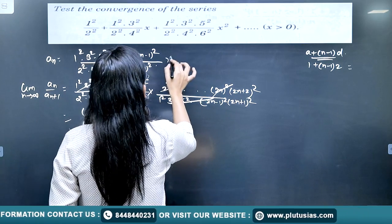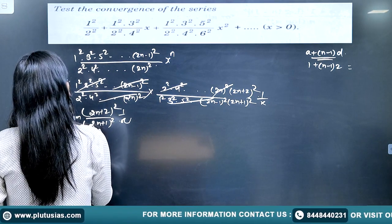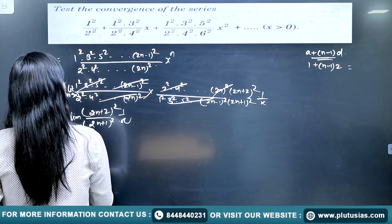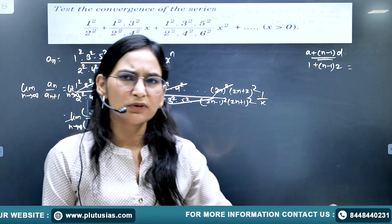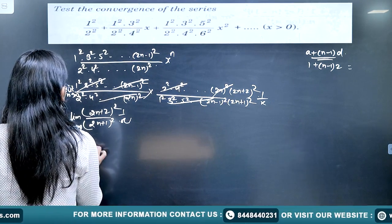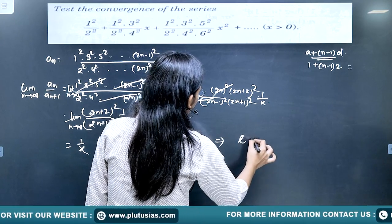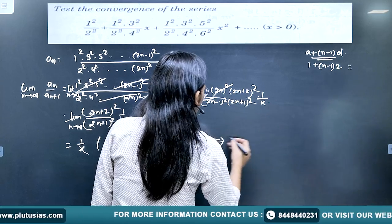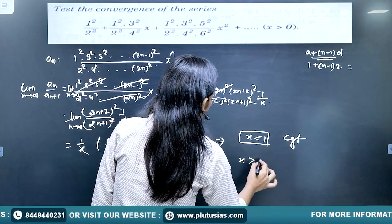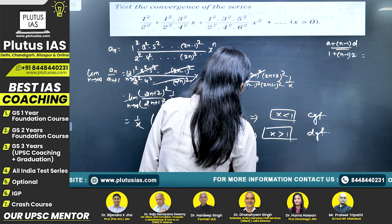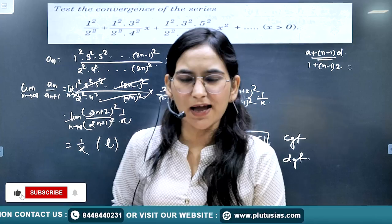We also have a factor x^n in the terms, contributing a factor of 1/x. Taking the limit as n → ∞ — bringing out the highest power of n from numerator and denominator — gives l = 1/x. By D'Alembert's Ratio Test: if 1/x > 1, i.e., x < 1, the series is convergent; if 1/x < 1, i.e., x > 1, the series is divergent; and the test fails for x = 1. That is how you apply these tests. Stay tuned for more results — thank you.